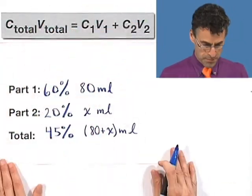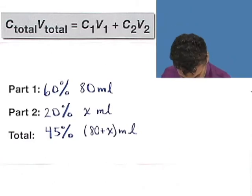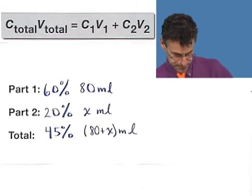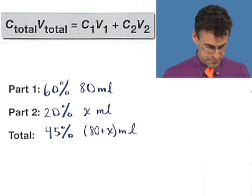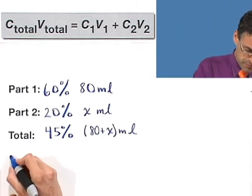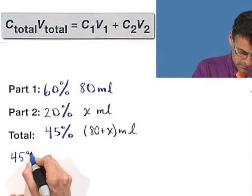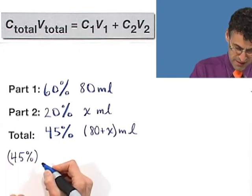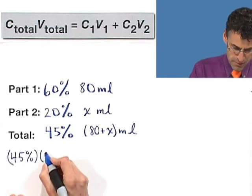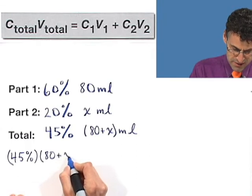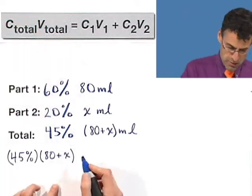And solve for x. So, if we put that together, let's try that right now live. What we see is 45% of, that means times, the volume, which is 80 plus x. So that's this side equals...